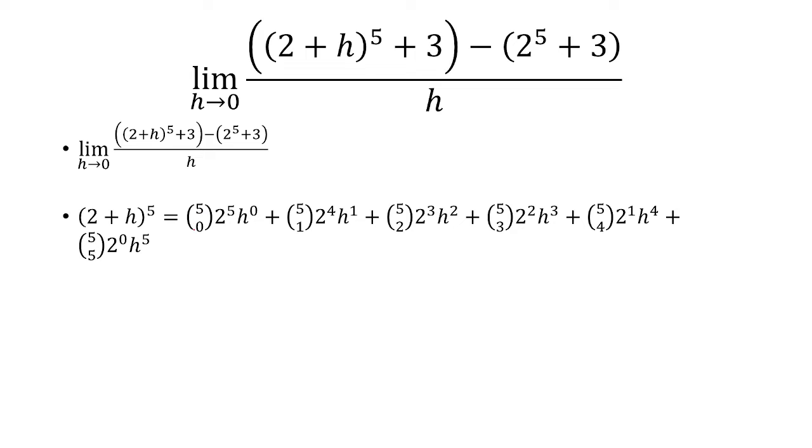So we have 5 choose 0, 2 to the 5th, h to the 0. And for each term, we're going to increase this bottom number from 0 going up to 1, 2, etc., up to 5.